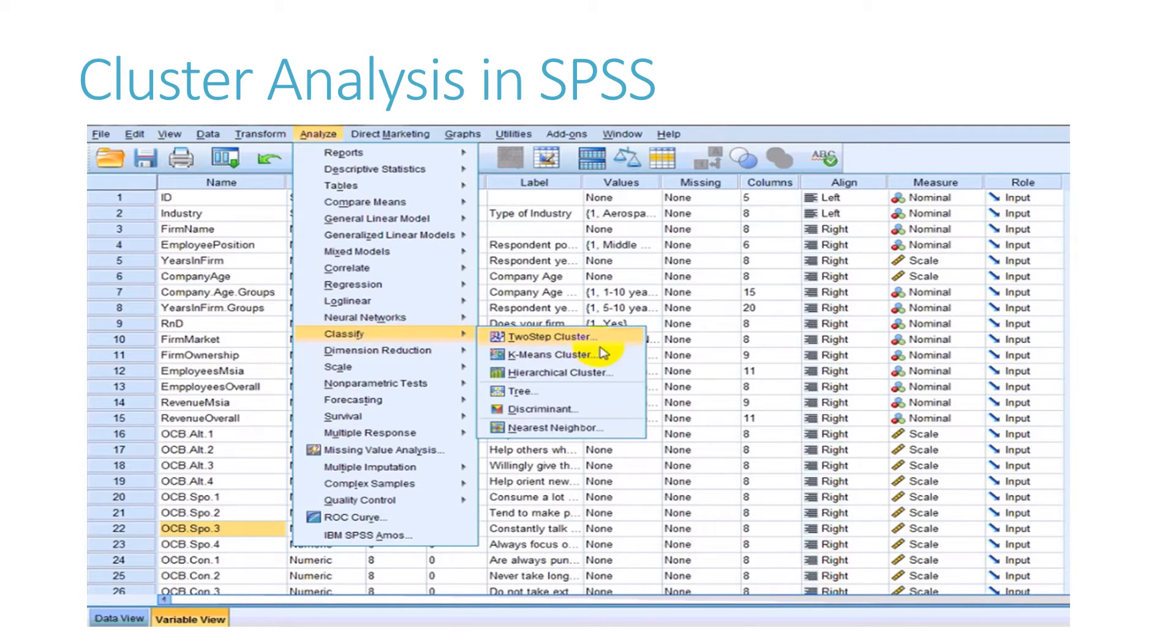You find it in the Classify section under Analysis. As you can see here, three types of cluster analysis are there in SPSS: two-step clustering, k-means clustering, and hierarchical clustering, which I will discuss in subsequent slides.